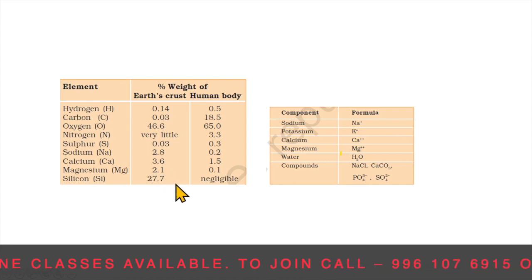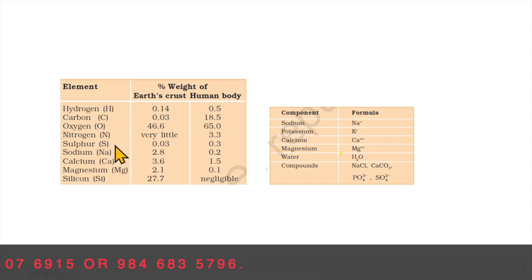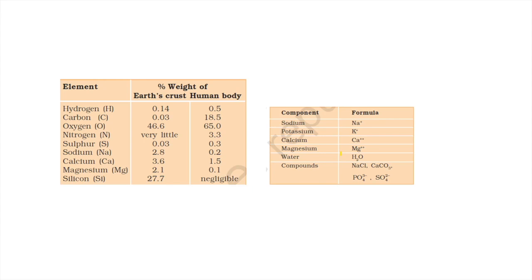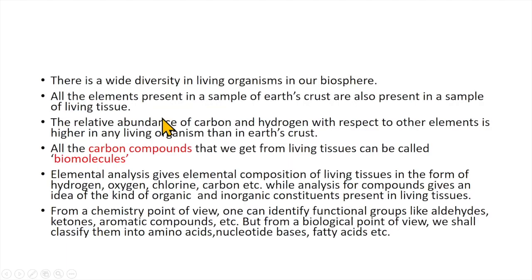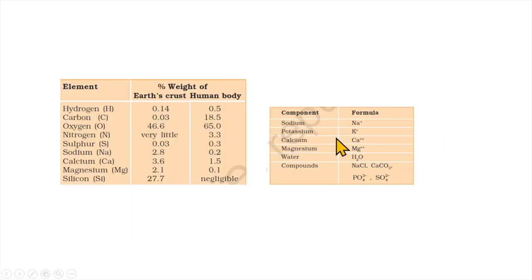Now in this study we can see organic compounds and inorganic salts in the earth crust — silicon 27.7%. Comparing living organisms with non-living beings, all the basic elements are the same. The difference is in the relative proportion. There is a wide diversity in living organisms in our biosphere. All elements present in a sample of earth crust are also present in living tissue. The relative abundance of carbon and hydrogen with respect to other elements is higher in any living organism than in the earth crust.